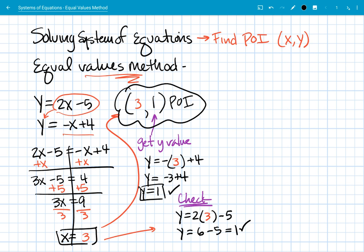Okay, let's just do one more and then I'll send you off to do some practice. Alright, so new system: y equals 3x minus 7 and y equals x minus 3.